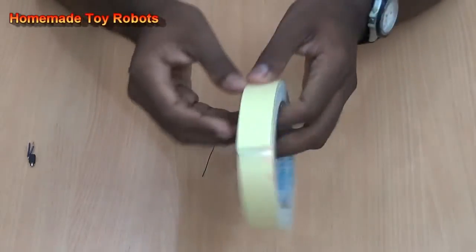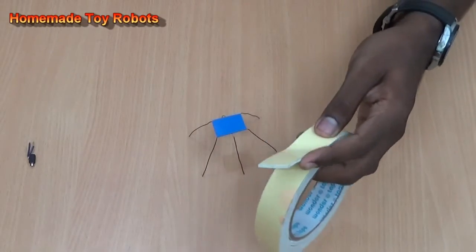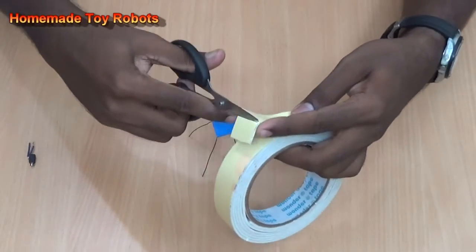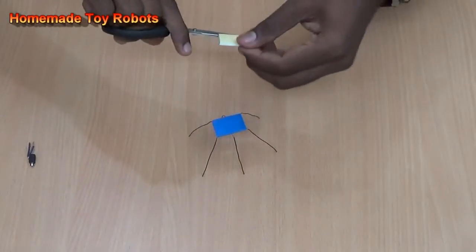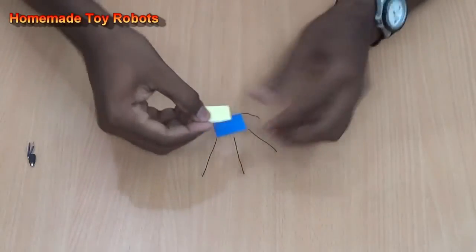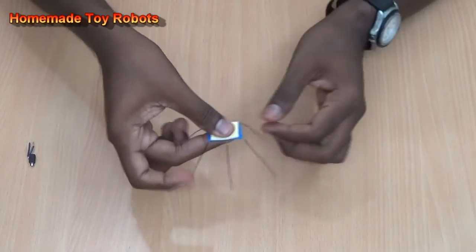Next take the double sided tape and cut a piece. Let's fit it on the top of the robot.